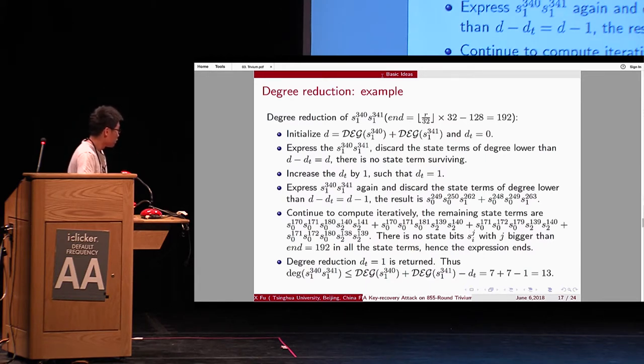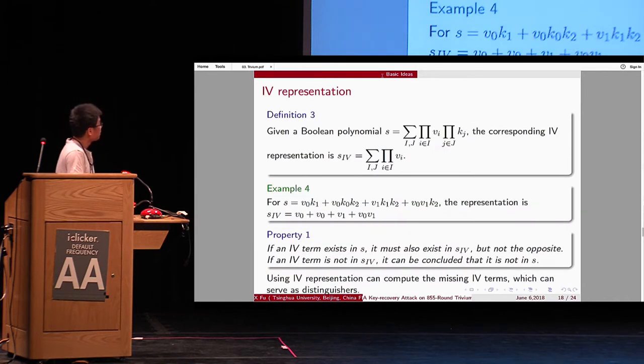So, if we decompose these terms, we find the degree, this degree is 7. And this degree is 7. And dt is 1. And so, this term, the degree of this term must be 30. So, it is more accurate.